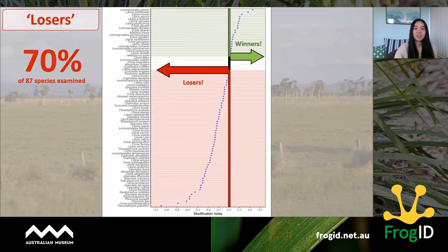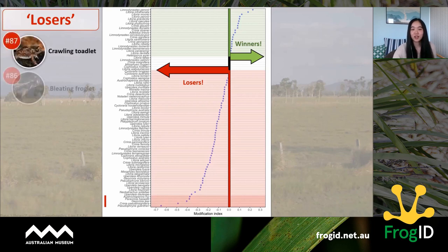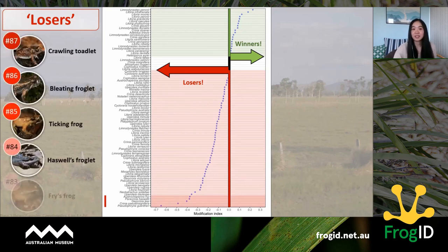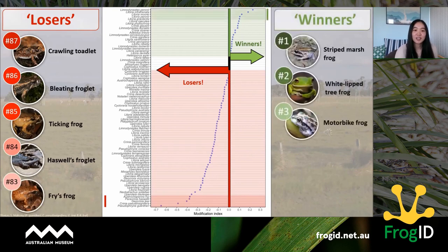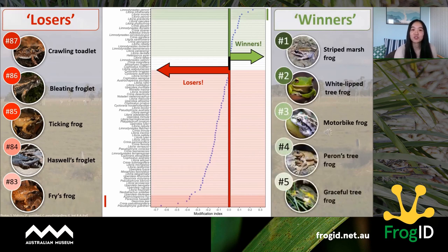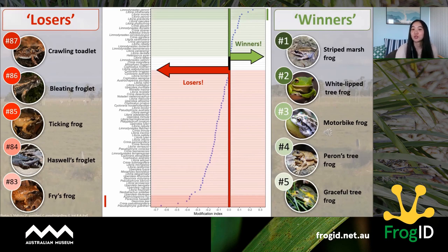Here are the top five most intolerant frogs, and here are the winners — the top five most tolerant frogs. If you're a Sydneysider you might be familiar with number one, the striped marsh frog, whose call sounds like a dripping tap or microwave popcorn. Those in WA might have heard of the motorbike frog, which is number three. The top five are all really frequently recorded in suburban backyards. Among the winners, several — including number five, the graceful tree frog — have successfully formed breeding populations in towns outside their native range, thanks to being stowaways in fruit boxes.